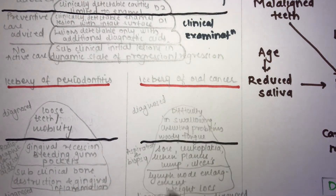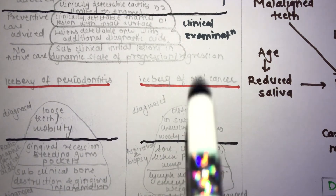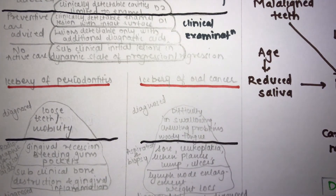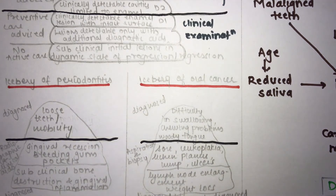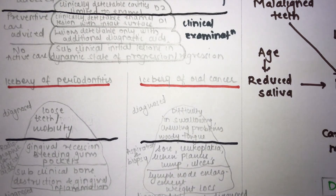The ultimate purpose of the iceberg phenomena is to spread awareness that a disease may not look as severe as it actually is. Some people think a disease is normal when it may not be — this is the essence of the iceberg phenomena.